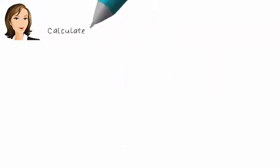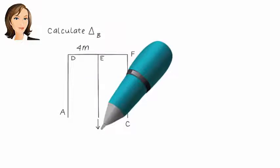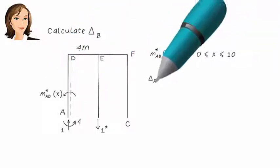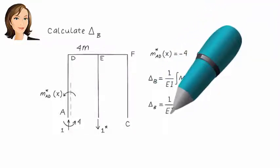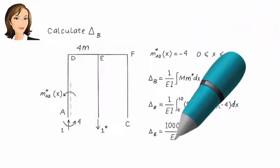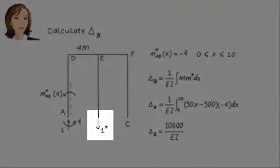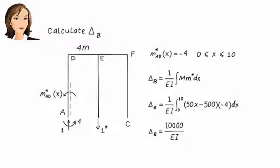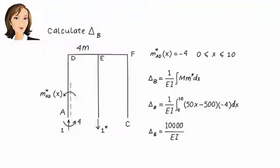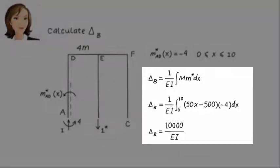Now we need to calculate M star. To do so, we need to place a virtual unit load in the direction of the desired displacement at B. Since under the applied load only member AD has a non-zero moment, we only need to come up with the moment equation for AD. If we integrate M times M star, we get delta B.